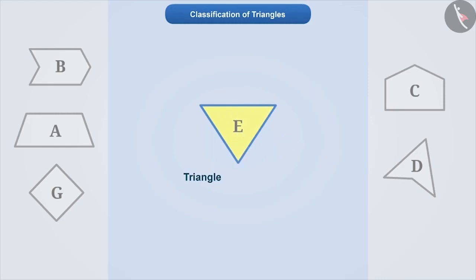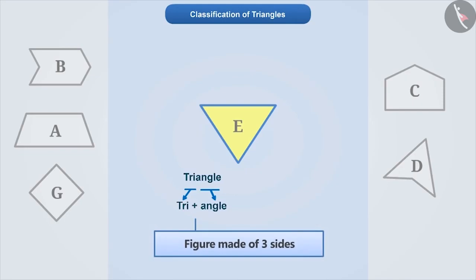To correctly identify a triangle, it is important to understand its concept correctly. Triangle is made of 'tri' plus 'angle', which means a figure that is made of three sides. Therefore, we can say that a figure that is made up of three sides is called a triangle. In the given figures, only E is made up of three sides, and therefore only this is a triangle.